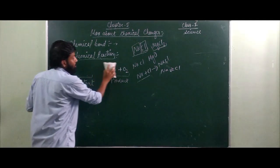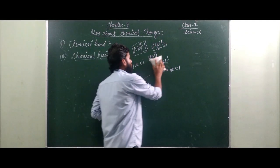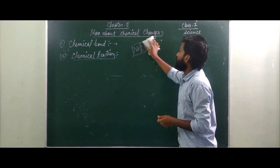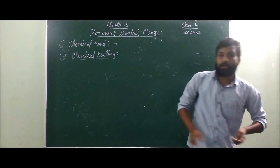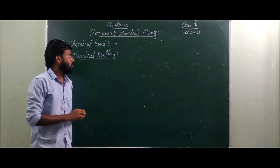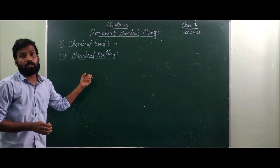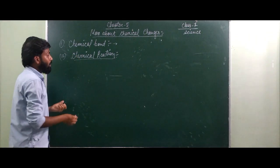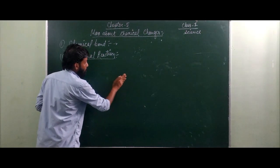Chemical reactions can be of two categories: one is a balanced chemical equation, and the other is an unbalanced chemical equation. You should always remember that if you want a chemical reaction to occur properly, you have to always make your chemical equation balanced. Let's learn in a simple way how we are going to make it balanced.